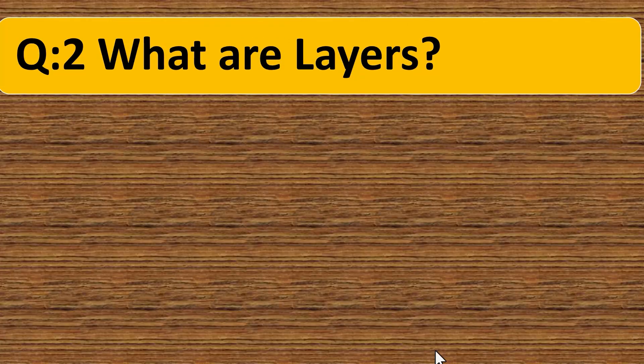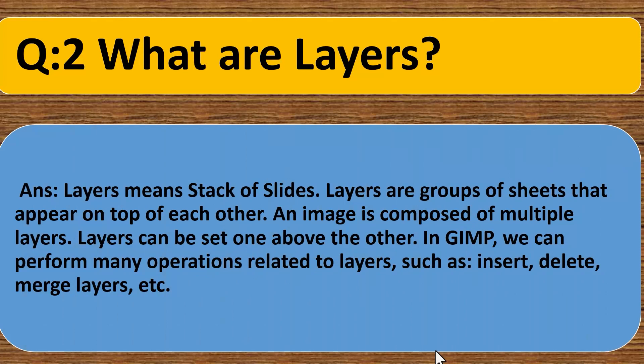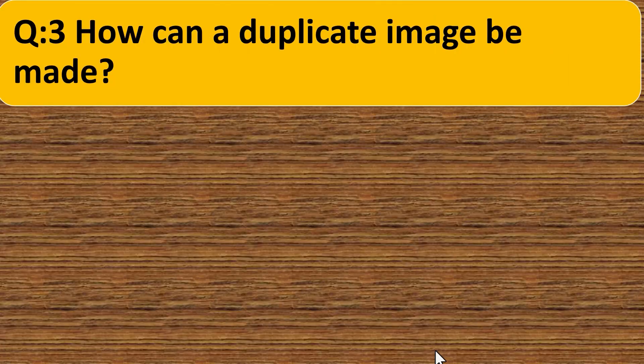Question two. What are layers? Answer. Layers means sheets of slides. Layers are a group of sheets that appear on top of each other. An image is composed of multiple layers. Layers can be set one above the other. In GIMP, we can perform many operations related to layers such as insert, delete, merge layers, etc.